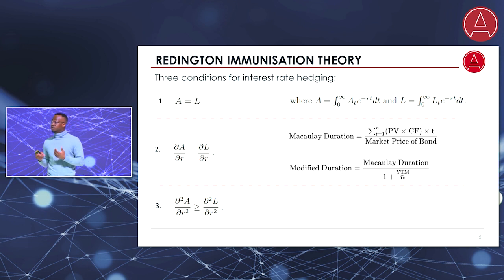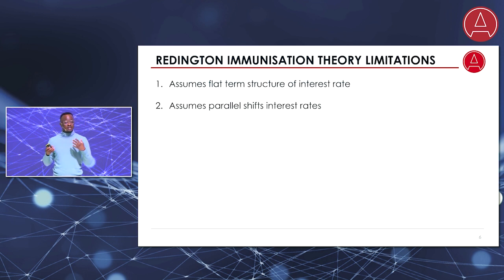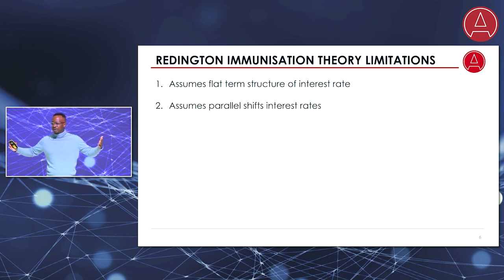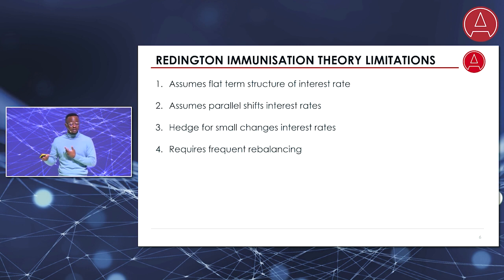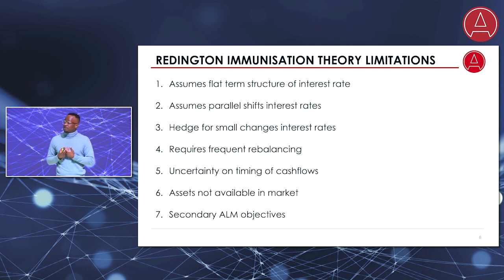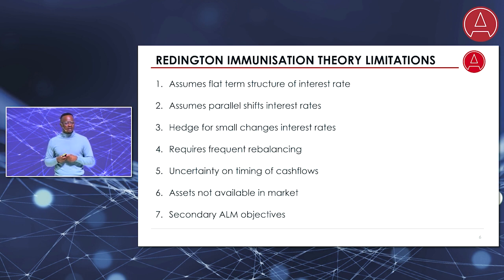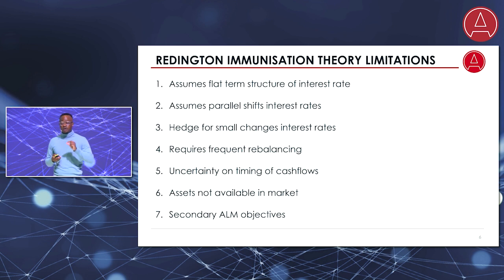It served us well. However, it has several shortcomings, the first of which has to do with its assumptions. It assumes that interest rates are flat through time and that when they move, they move in parallel, which is not really the case in reality. It also only works for small changes in interest rates, consequently requiring frequent rebalancing and recalculation. The theory is also silent on what to do when there is uncertainty in cash flows and timing of asset and liability cash flows. It's also silent on how we handle situations when certain assets we require are not available. Another big limitation is that it doesn't provide a native way to optimize for multiple objectives. This deep reinforcement learning technique would directly address these issues.